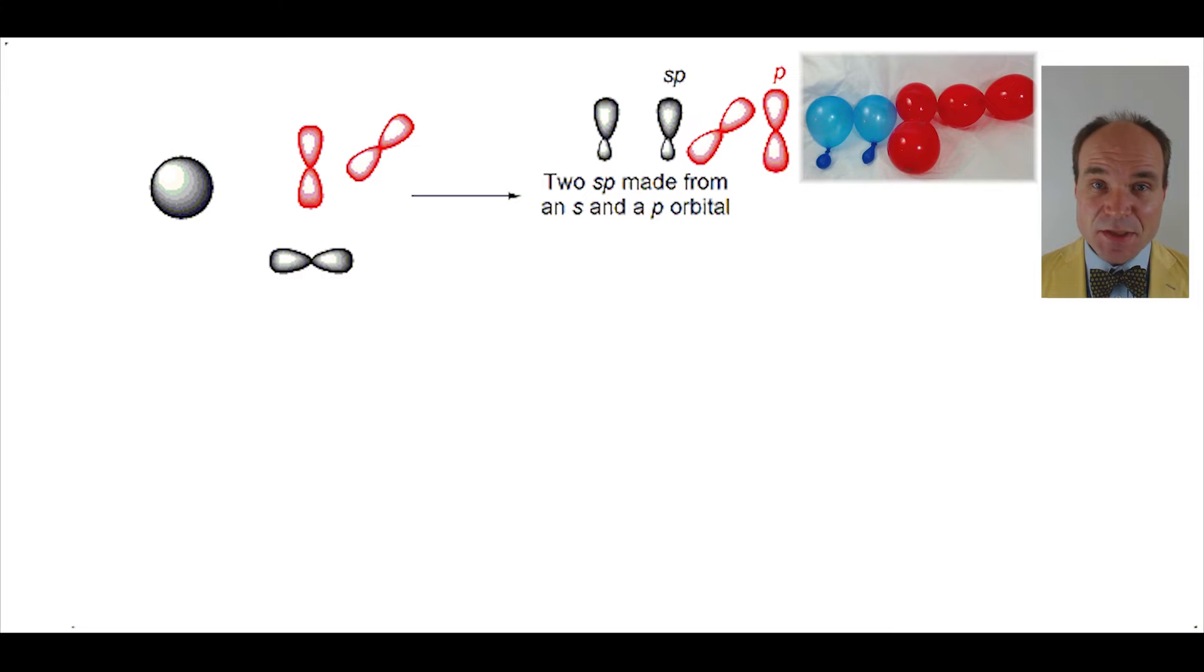The other two, which are p orbitals, remain untouched and stay as p orbitals.